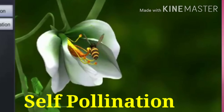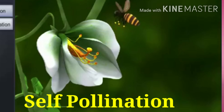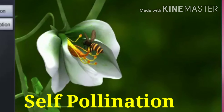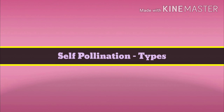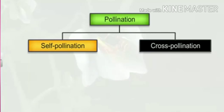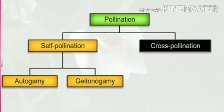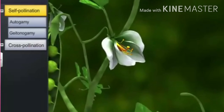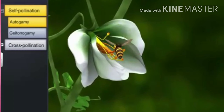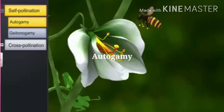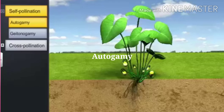When the pollen grains of the anther fall on the stigma of the same flower or other flowers of the same plant, it is known as self-pollination. Self-pollination is further divided into two types: autogamy and geitonogamy. When the pollen grains of a flower fall onto the stigma of the same flower, this is known as autogamy.